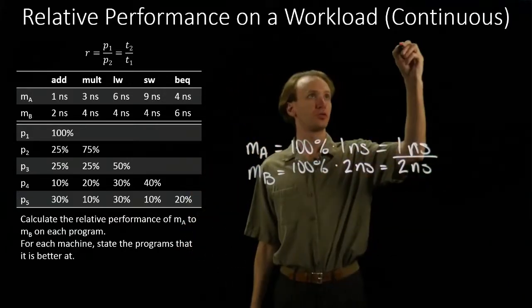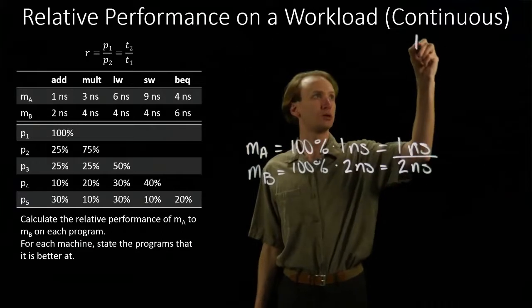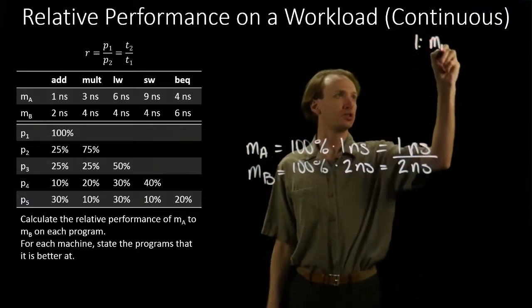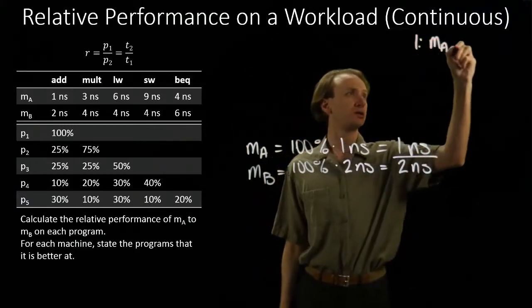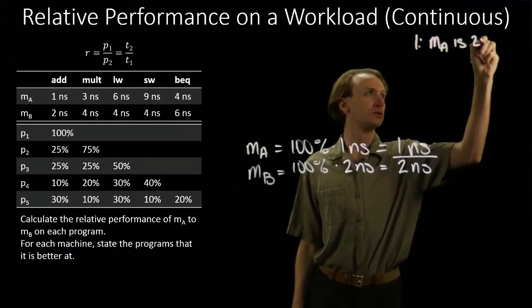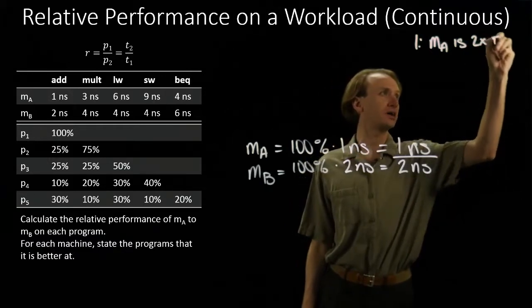So for program one, machine A is two times faster.